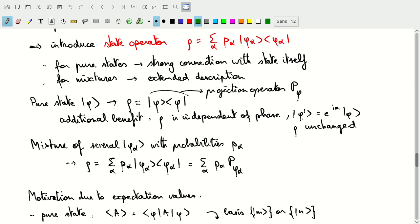The information that this is independent of the phase is actually included in that because the phase will drop out. And then, again, if you look at mixtures, this changes into a weighted sum of several projection operators weighted with the probability of having that particular state in phi.